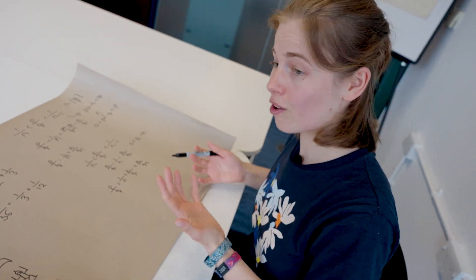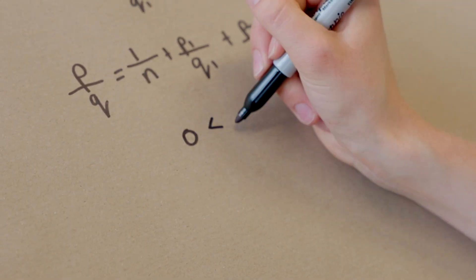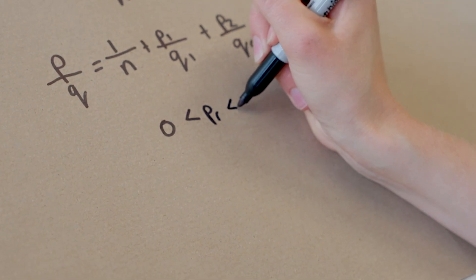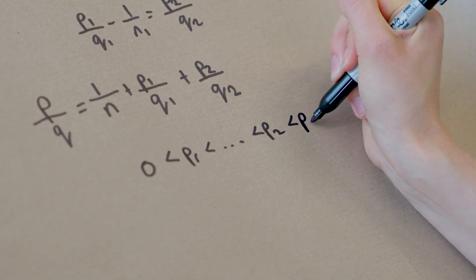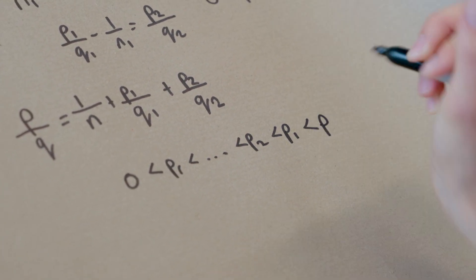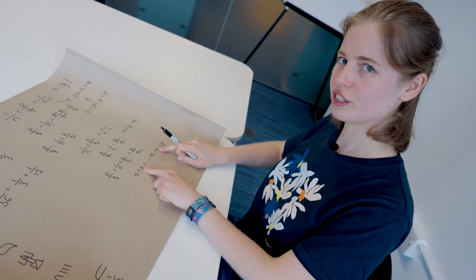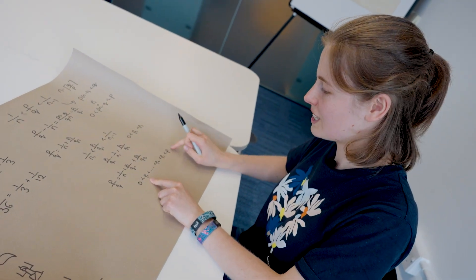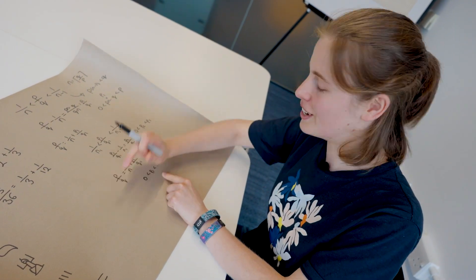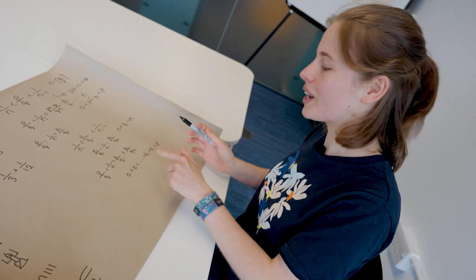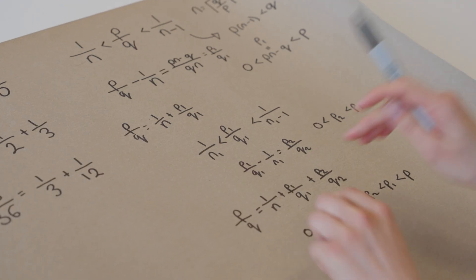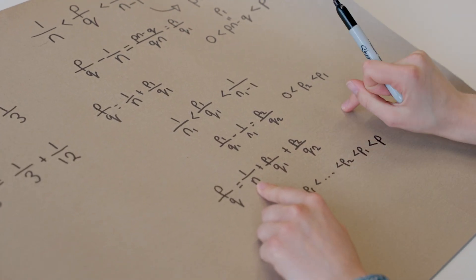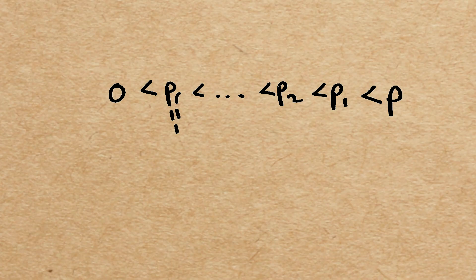So this is why it's called an algorithm. It's a series of steps. And what we're going to end up having is zero is less than p r for some r is less than, and it just keeps going, less than p. But these are all integers. These are all positive numbers. We can't have it going down infinitely. One of these is eventually we're going to have to hit one.